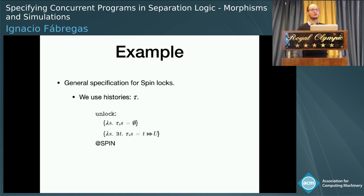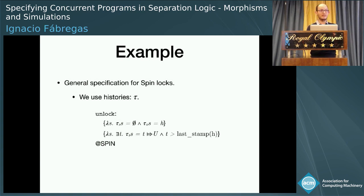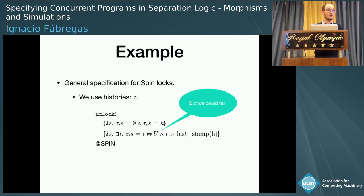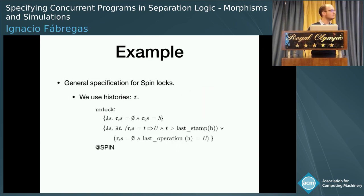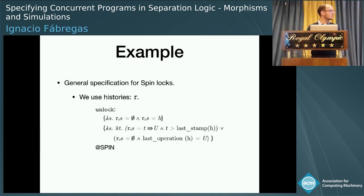For unlocking, we could try to do exactly the same idea — we start with no history and put one new timestamp with unlock. But as I said before, this could fail; another thread could unlock before we try to unlock. So the specification should be a little bit more complex. We have to add the other case — when we cannot unlock, we leave our history empty and say that another thread was the one that performed unlocking. This very simple example already shows that the specification is not trivial.